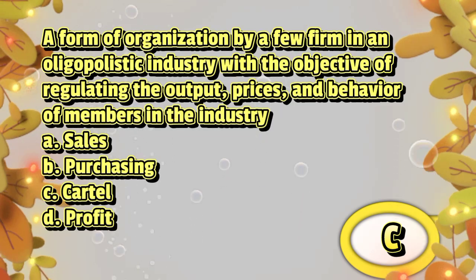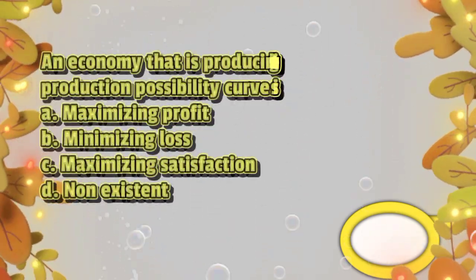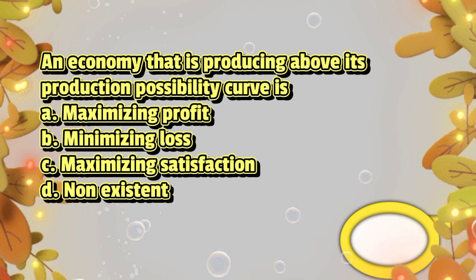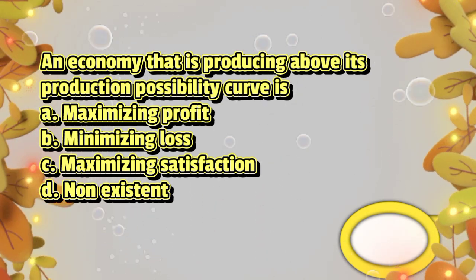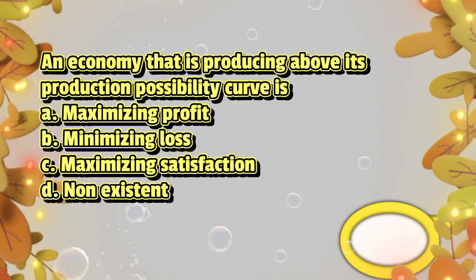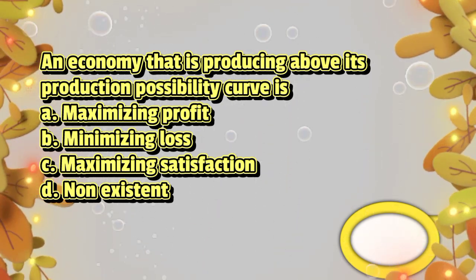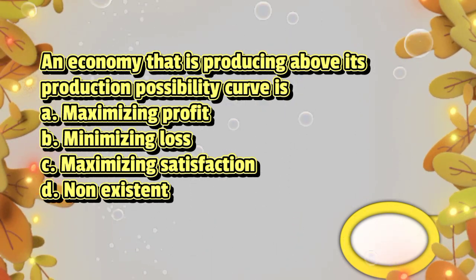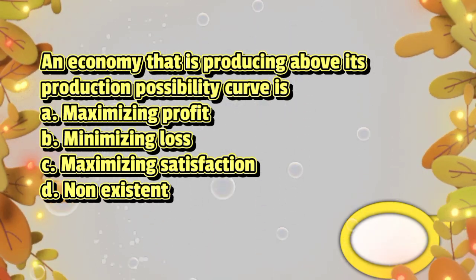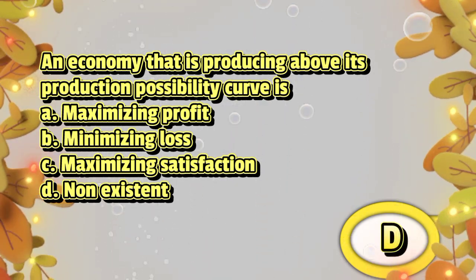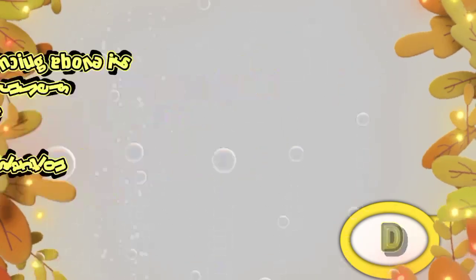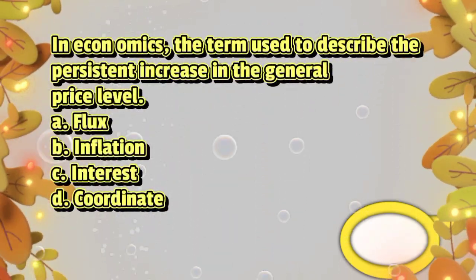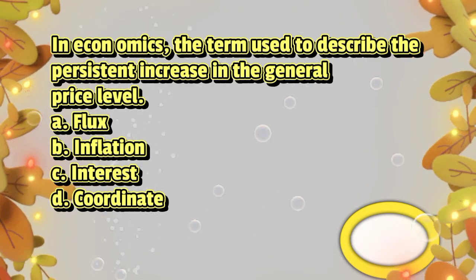An economy that is producing above its production possibility curve is: A. maximizing profit, B. minimizing loss, C. maximizing satisfaction, D. non-existent. The answer is letter D.